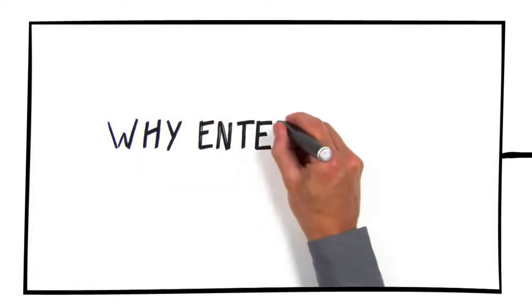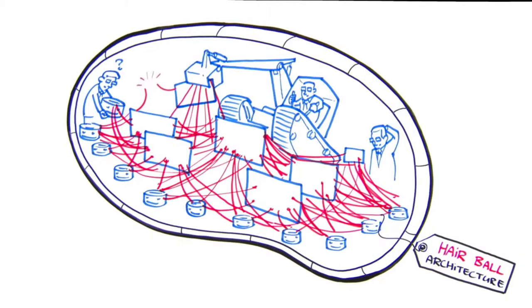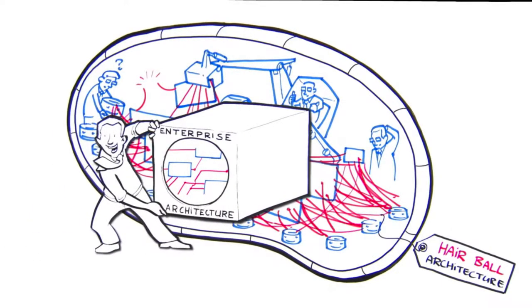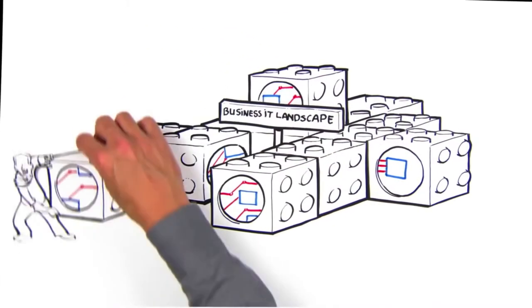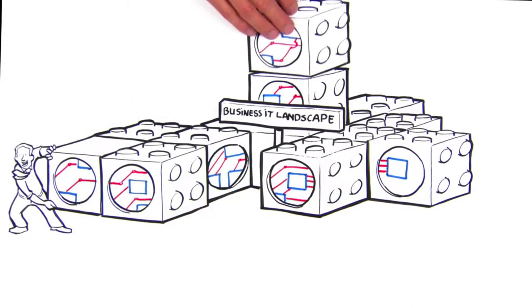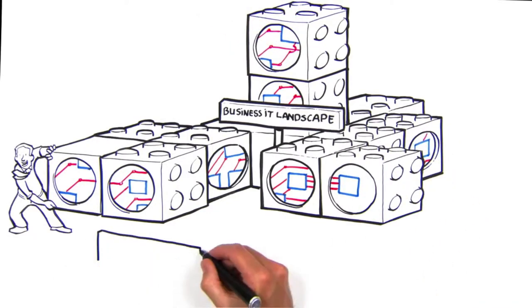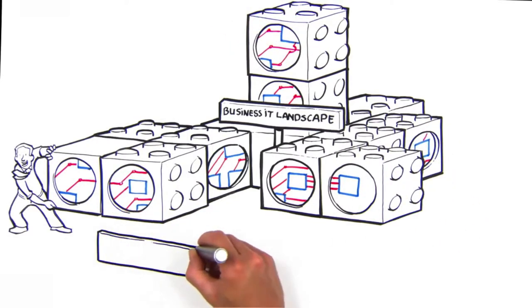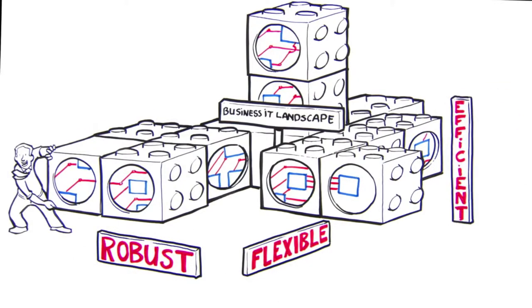You clicked this video wondering why should I bother with enterprise architecture? Well, most companies look like they have a hairball network, and that's where enterprise architecture comes in. In your business IT landscape, it should pretty much look like modules. Enterprise architecture should be robust, flexible, and efficient.